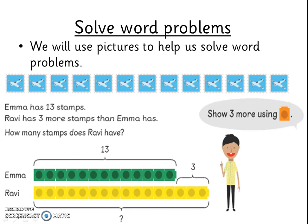After that, we will use pictures to help us with our working. Here we read that Emma has thirteen stamps and Ravi has three more stamps than Emma. Remember, the words more than means to add. We can find out how many Ravi has by adding three more stamps. As you can see, the thirteen green cubes show how many stamps Emma has, and the yellow cubes first show thirteen and three more for how many Ravi has. Can you use this to work out how many stamps Ravi has?